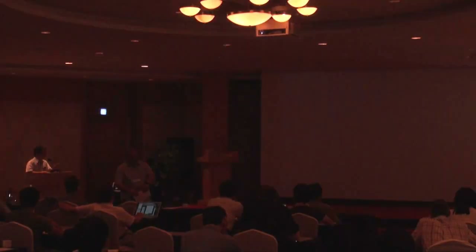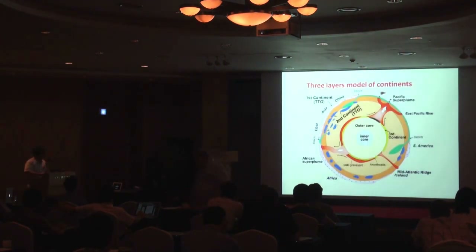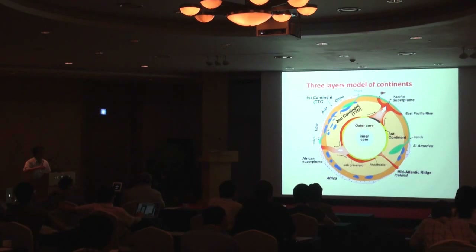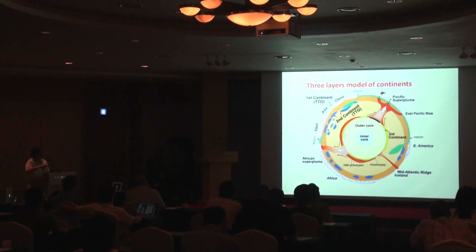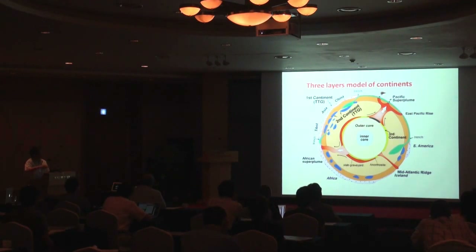I will start. This is a model to show the three-layers model of continents. The first continent we know well has granitic composition. The second continent, we think, again has granitic composition, but mainly in the mantle transition zone, specifically at the bottom. But some may be floating in the topmost lower mantle. The third one is yellow, an anorthositic one, together with Slave Craton and two supercontinents.